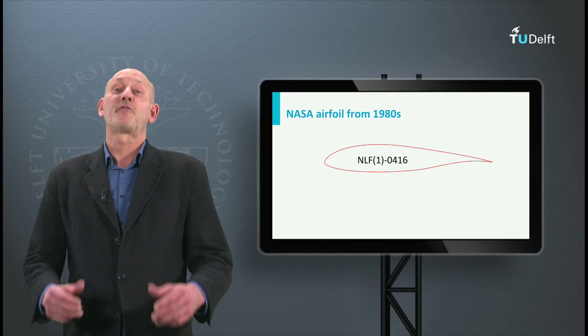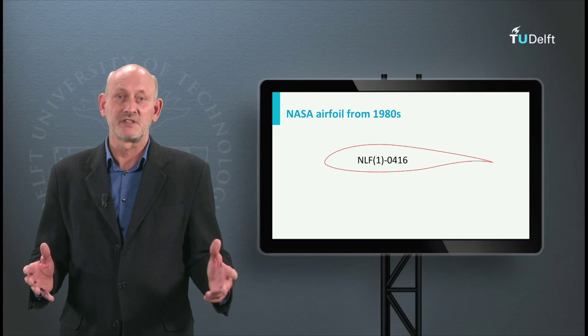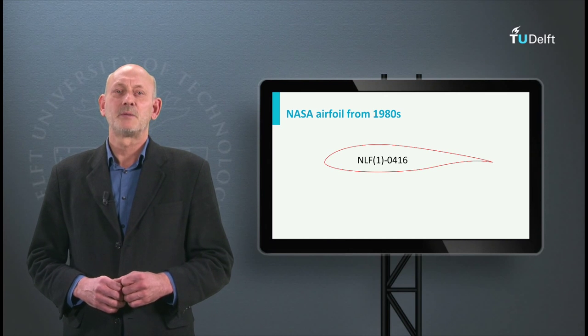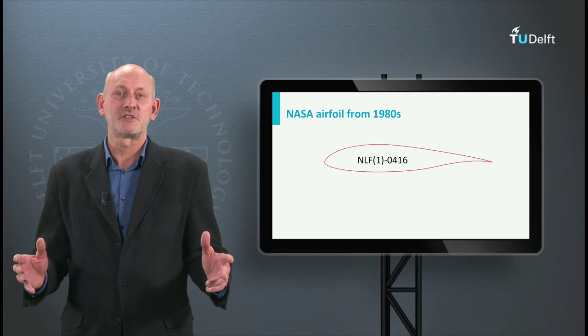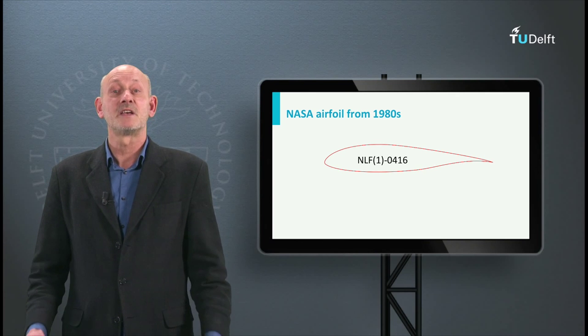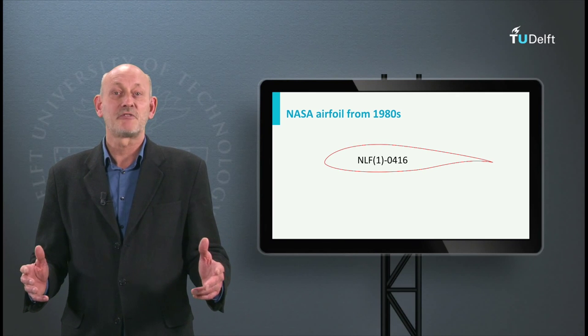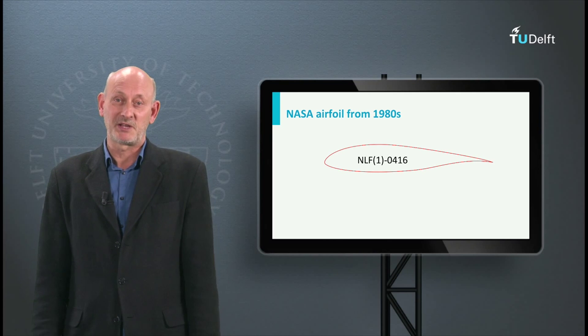Two of these airfoils are shown here. The NLF airfoil is 16% thick, the LS airfoil 17%. The big aircraft companies like Boeing and Airbus have always used in-house developed airfoils for their aircraft wings, of which the shapes for obvious reasons seldom see the public domain.